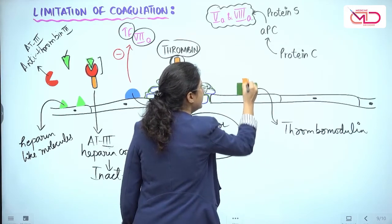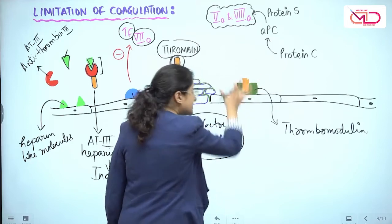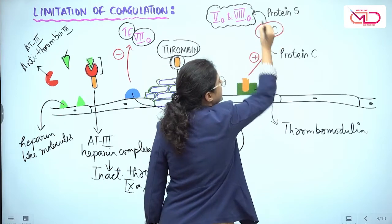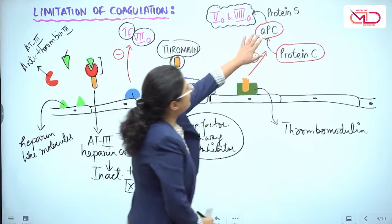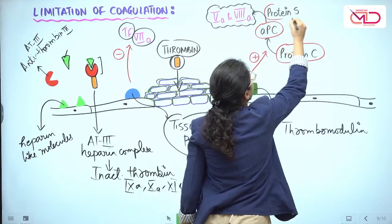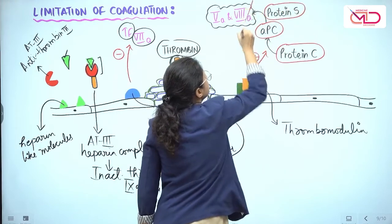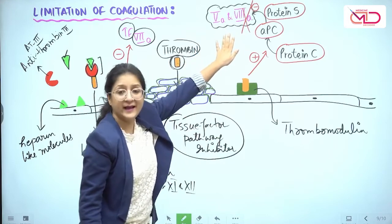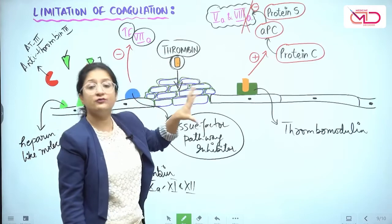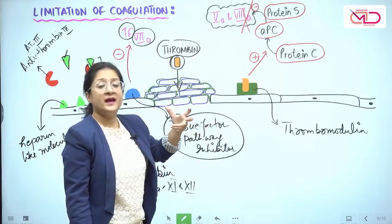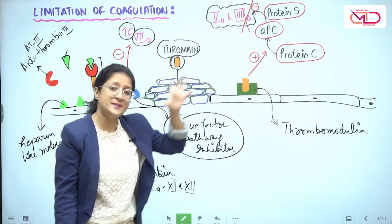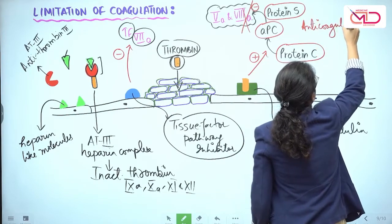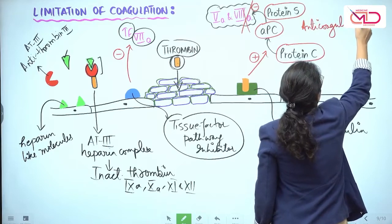Another molecule expressed by nearby healthy endothelial cells is thrombomodulin. Thrombomodulin stimulates the binding of thrombin, thereby inactivating it. Secondly, this complex stimulates the production of activated protein C from protein C. Activated protein C, in the presence of protein S, causes inhibition or inactivation of activated factor 5 and activated factor 8. So in our body we have naturally circulating anticoagulant factors, and this balance between thrombin formation and anticoagulation is maintained by the body through protein S and protein C.